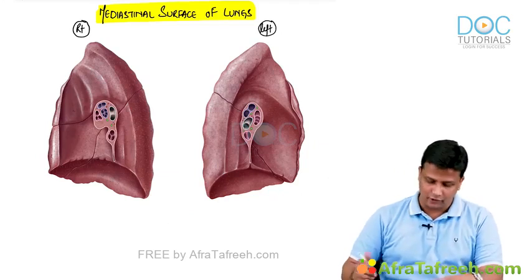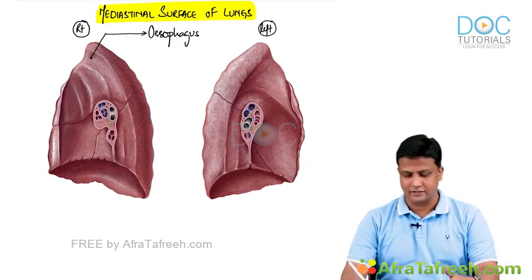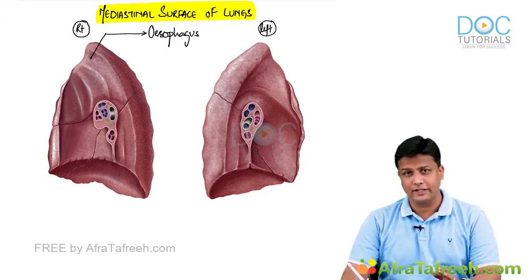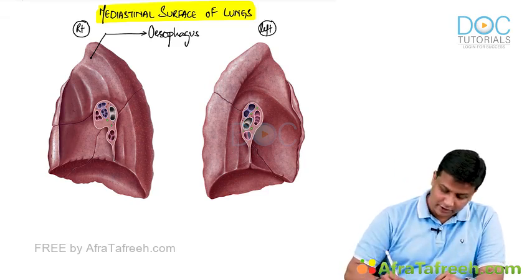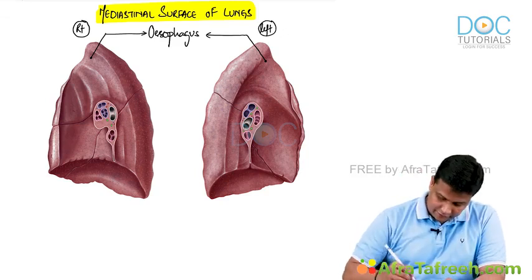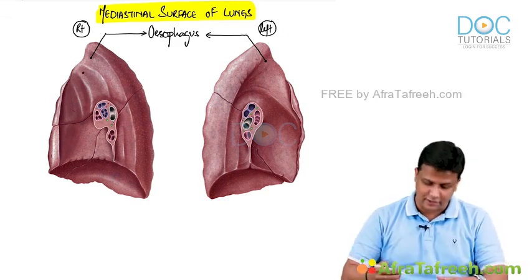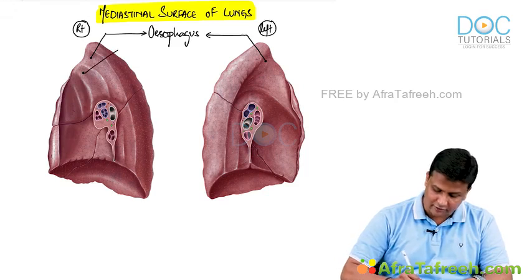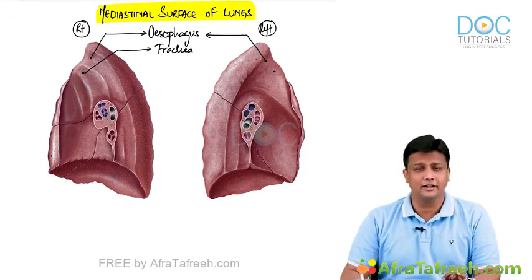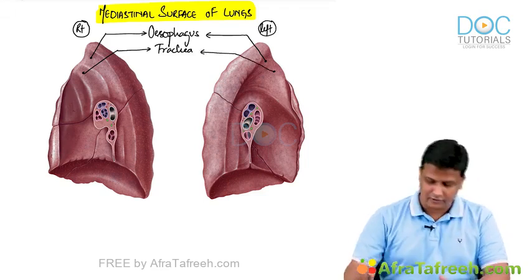On the mediastinal surface of the right lung, this impression here represents the esophagus. Similarly, as mentioned, esophagus and trachea will be the same for the left lung also — this impression on the left lung is also representing the esophagus. Right in front of the esophagus, there is one more impression, and that impression in front of the esophagus has to be the trachea. So this is representing the trachea, and similarly on the left side, the impression in front of the esophagus is the trachea.